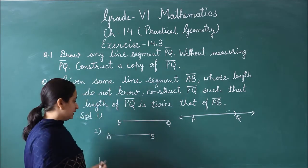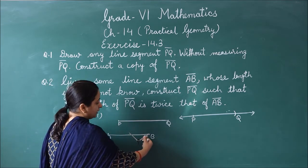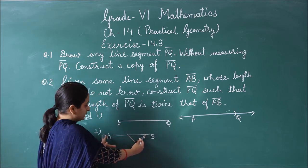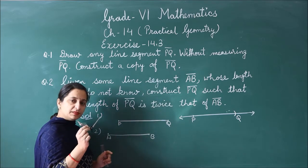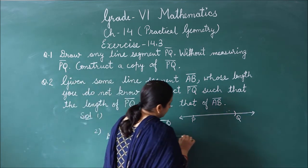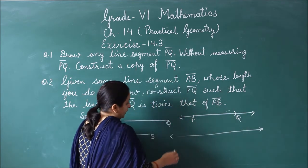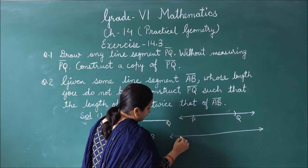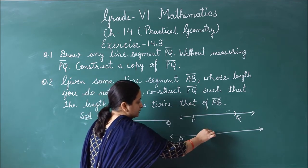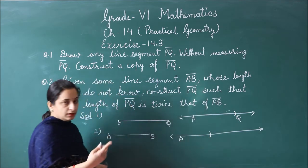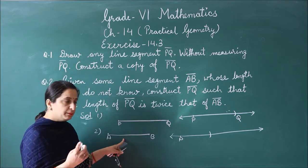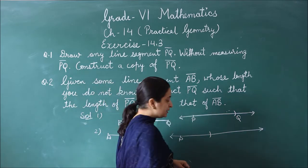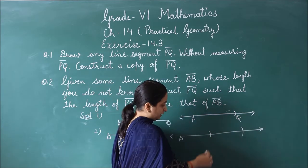We will again use the compass, opening it to match AB. Then we will draw a line. One point will be P for PQ. We will place the compass here and give an arc. Here we have one arc. This is one time measurement. Now we make another point and give an arc here, making a second point on this point.